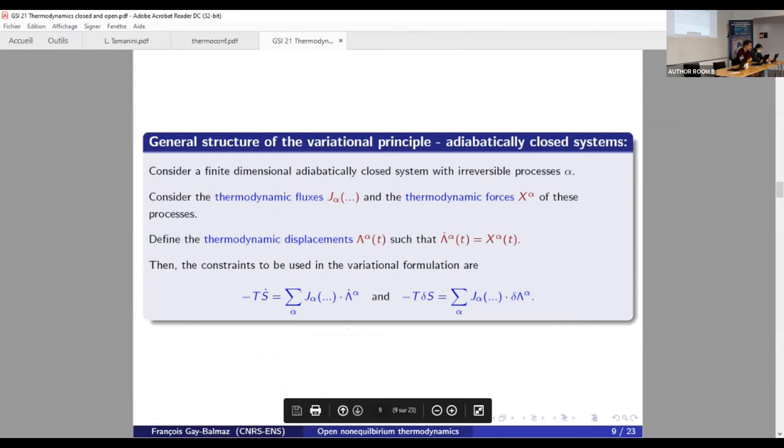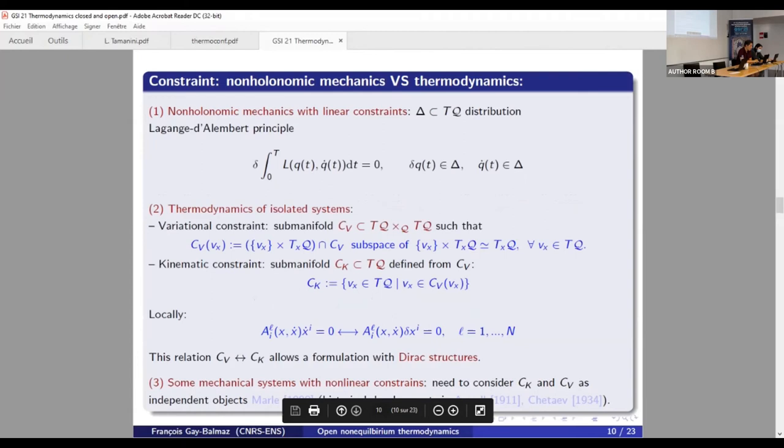What is more important is the general structure of the variational principle for closed system. So what you have to do is to first identify the process. Then you identify the fluxes and the thermodynamic forces X and J. You define the thermodynamic displacement lambda such that its time derivative of the thermodynamic force of the process. And then you build a constraint in this form. TS dot is the sum of this process here. Flux times forces. So in the literature, these are always denoted J alpha X alpha in standard book like De Groot, Mazur. So here the X alpha is itself a rate lambda dot.